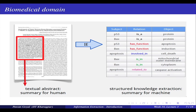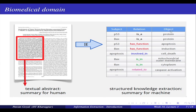Here is an example: you have a research paper in the biomedical domain with an abstract. From this abstract, can you extract information in a structured format - like p53 is a protein, Bax is a protein, p53 has function of apoptosis, and so on? All this information is available in the text data, but not in a nice structured format. From there you extract the entities and the relations between them - this is called structured knowledge extraction. The research paper abstract can be thought of as a summary for humans, and this structured knowledge can be thought of as a summary for machines.